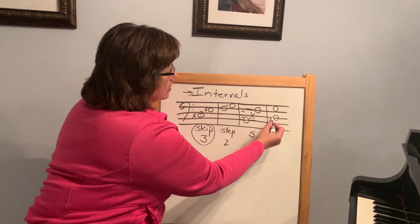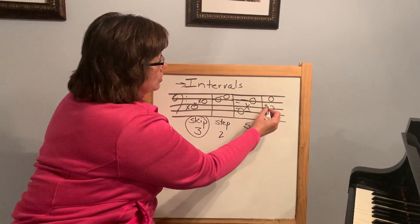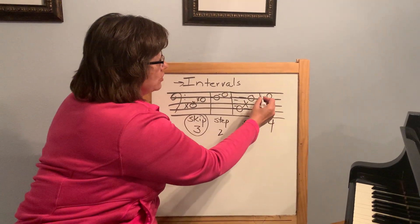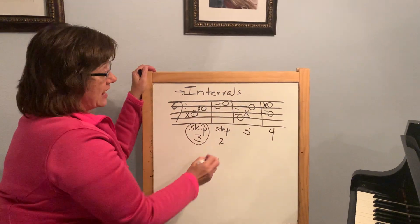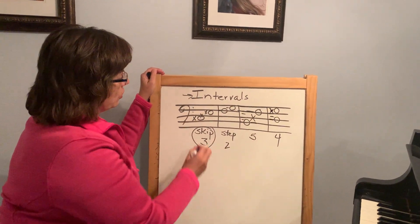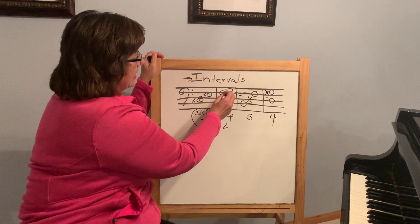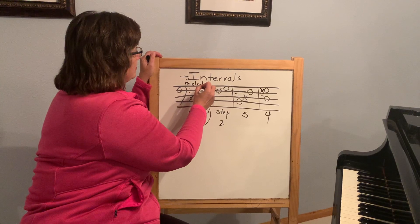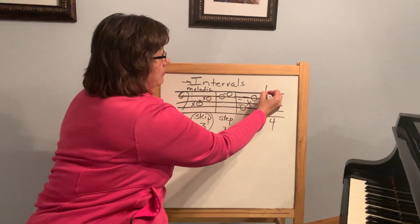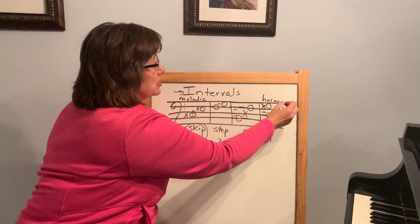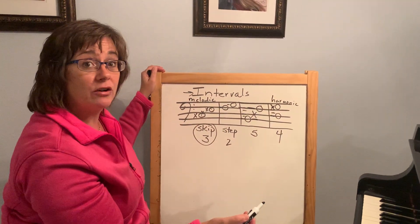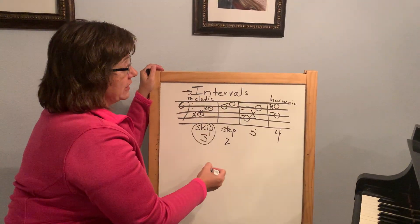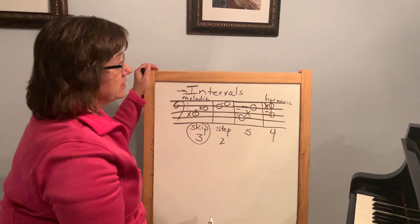What would your interval be here? One, two, three, four. I've got a line to a space, so they're different, but they're not neighbors like a step — that's an interval of four. I wrote all of these as one note at a time; those would be called melodic intervals. This one stacked on top of each other would be called a harmonic interval. Melodic means those notes are being played one at a time; harmonic means they're being played together.